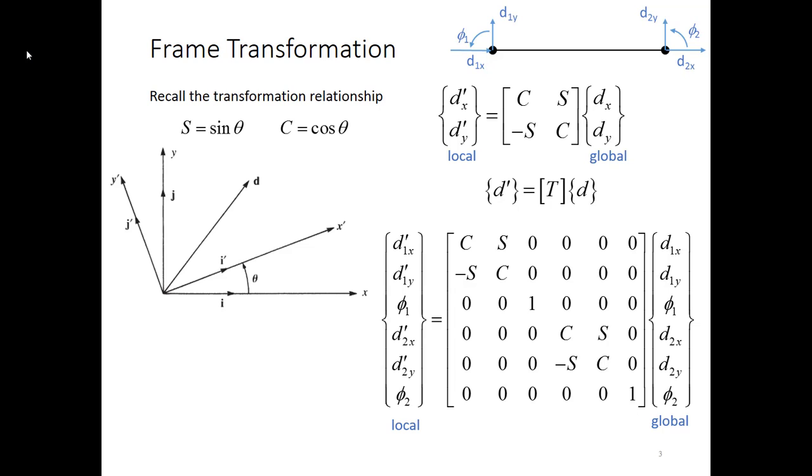So here's what it ends up looking like for my T matrix. Now where did this come from? Well it's pretty straightforward. The two by two matrix shown up at the top is simply reproduced for node 1 and node 2. So it takes d1x and d1y and converts it into d1x prime and d1y prime similarly at node 2.